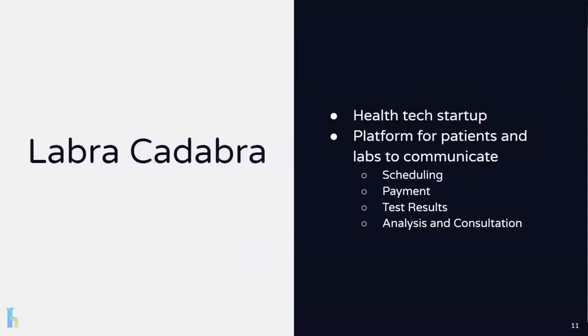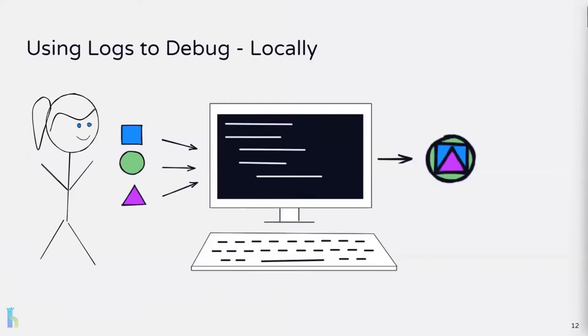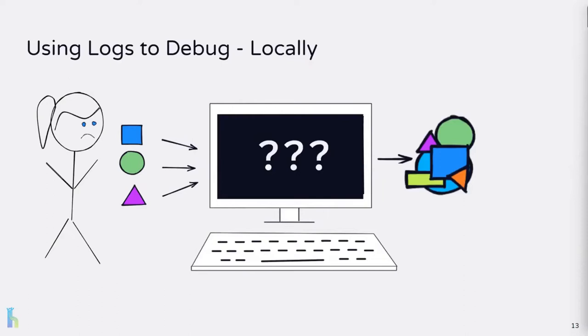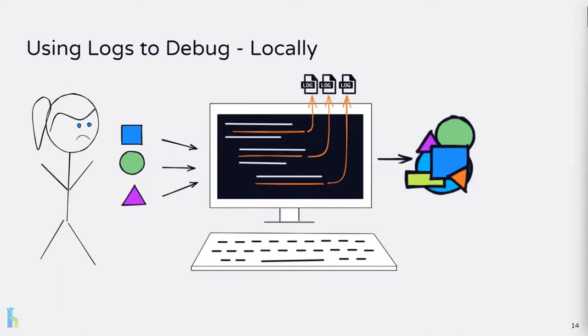Labracadabra is a small health tech startup company. They're a platform for patients and diagnostic labs to communicate. They provide scheduling and payment for lab tests, as well as the ability to view test results and analyses. Amy is a senior engineer at Labracadabra. She's working on her local computer, adding a feature to their application. She's written some code that takes an input and she expects a certain output, but this isn't exactly what's happening. So she can use logging to understand why the code is behaving this way. She writes a few lines of code to output the extra information she needs — in other words, she instruments her code to emit logs. With these extra details, she can pinpoint the issue and fix it.